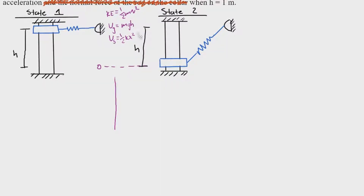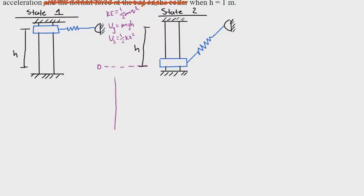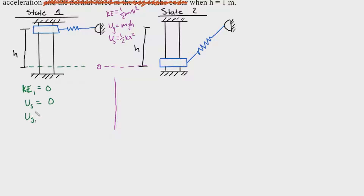Knowing these, we can define the initial and final states. For state one, there is no kinetic energy because the collar starts from rest, and no spring potential energy because the spring is unstretched at state one. So KE₁ equals zero, spring PE₁ equals zero. The gravitational potential energy is mgh because the collar is h distance from the zero-potential reference point, so Ug₁ equals mgh.